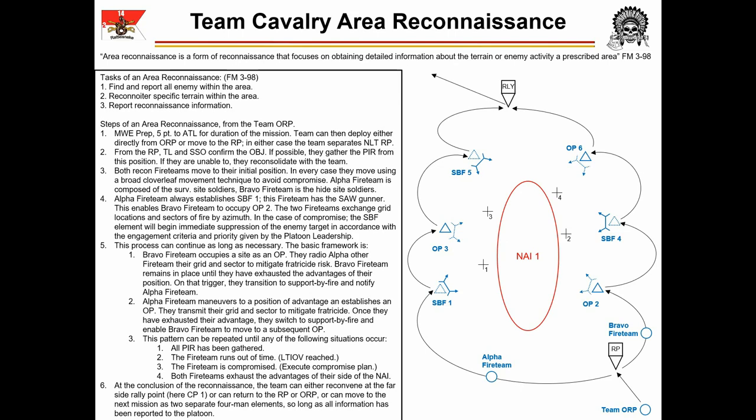This board begins with the entire team consolidated in the team ORP. The team leader then directs the team to begin MWE prep — Men, Weapons, and Equipment. Two men at a time can conduct MWE. The fastest way to manage this is to conduct MWE as task-organized teams: two men from Fireteam Alpha, then the other pair in Fireteam Alpha, and then Fireteam Bravo. Deliberate MWE should take no more than 15 minutes, with the standard being that the two fireteams deploy from the team ORP 20 minutes after occupying it. This leaves five minutes for the five-point contingency plan.